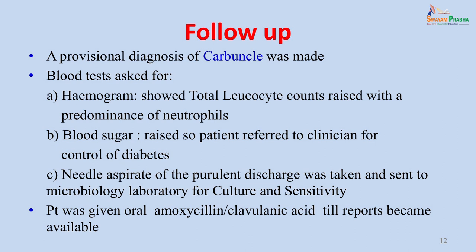Investigations: blood tests were done. Hemogram showed raised total leukocyte counts with predominance of neutrophils. Fasting blood sugar was 200 mg/dL, so the patient was referred to a clinician for investigation and control of diabetes. A provisional diagnosis of carbuncle was made, and needle aspirate or purulent discharge was taken and sent to the microbiology laboratory for culture and sensitivity. The patient was provisionally given amoxicillin and clavulanic acid.